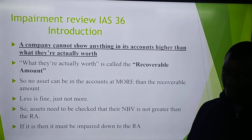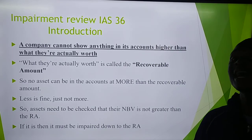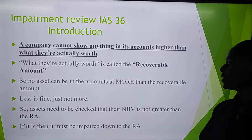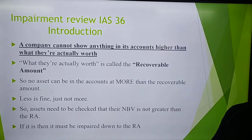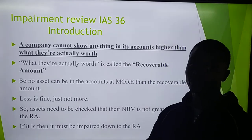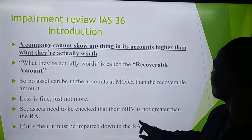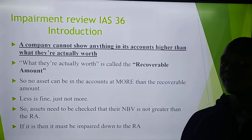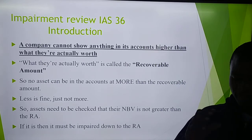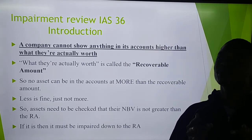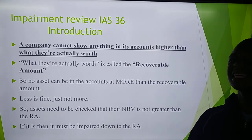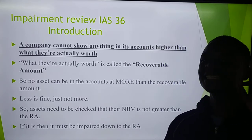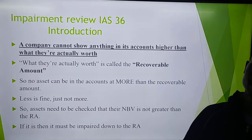For a business, it's better to understate than to overstate. So assets need to be checked that their net book value — which we call the carrying amount — is not greater than its recoverable amount. If the net book value is greater than the recoverable amount, the asset should be shown at its recoverable amount.